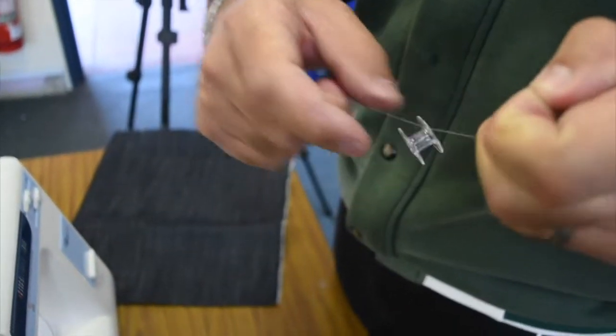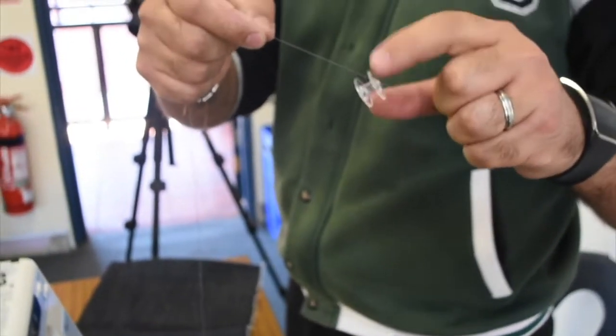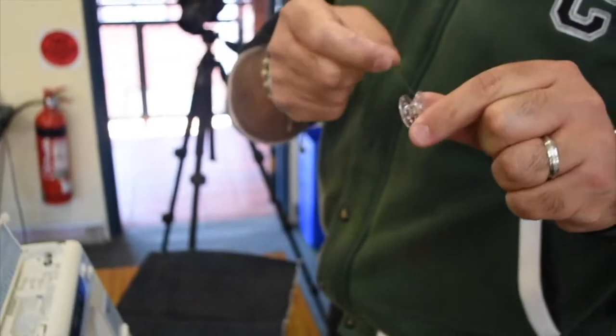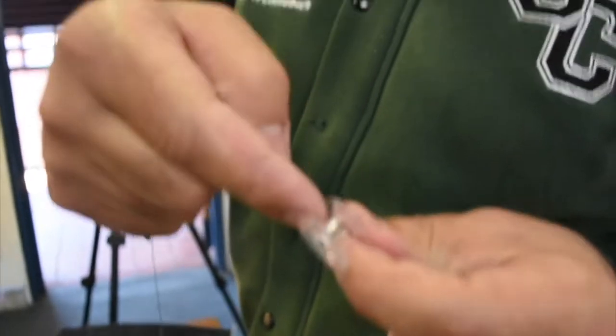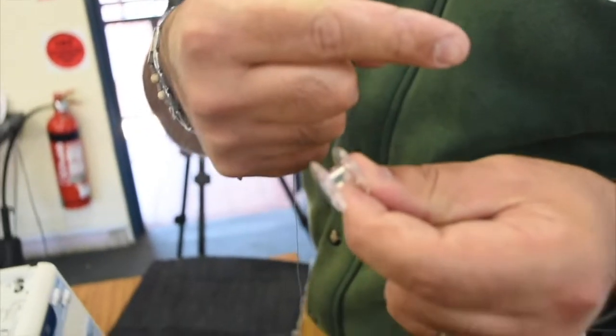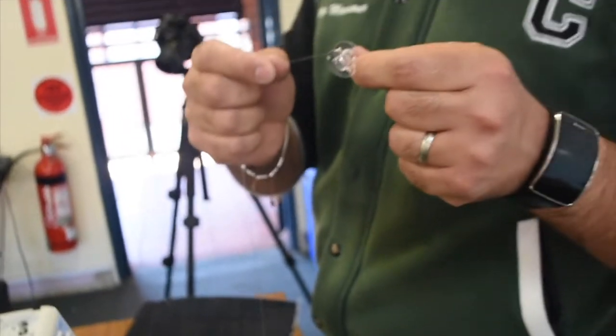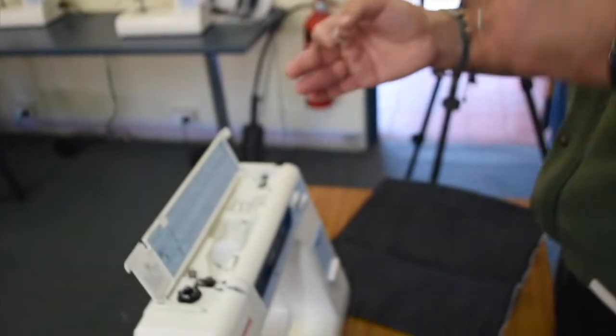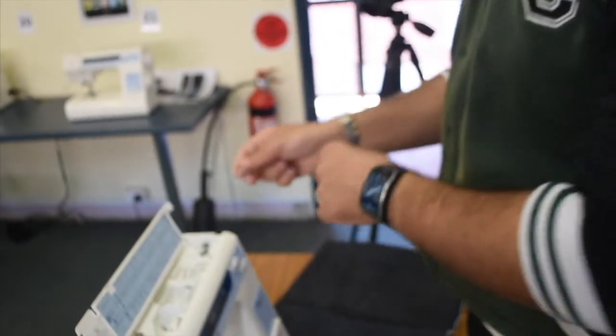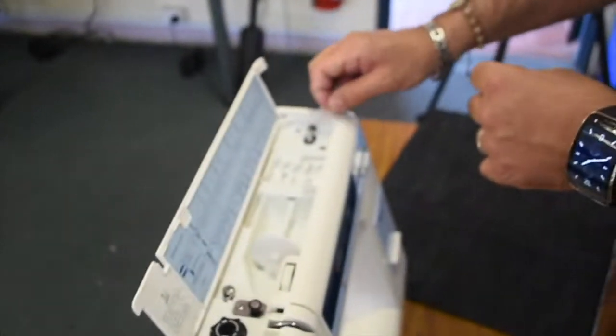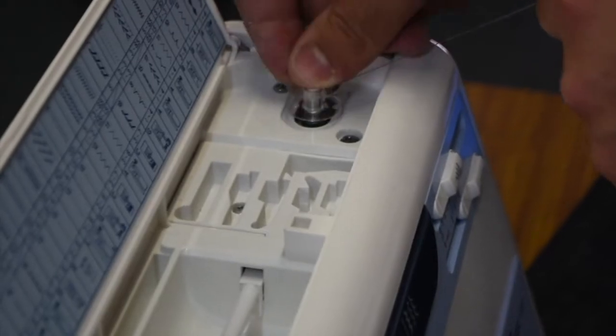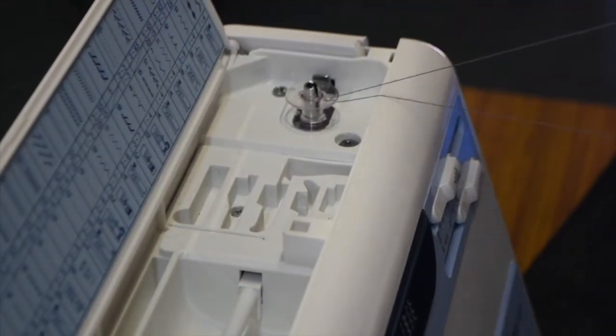There we go. So there's our bobbin going through the middle, going out as you can see. This is the most important part - through the middle, going out. Now we grab the thread, pull it out a little bit, and place it in the bobbin head which is here. We put it in and click it.